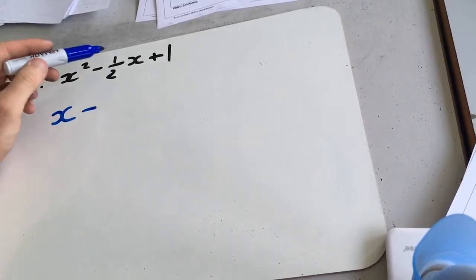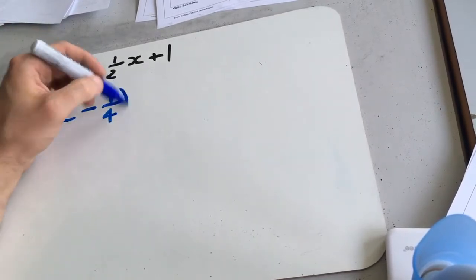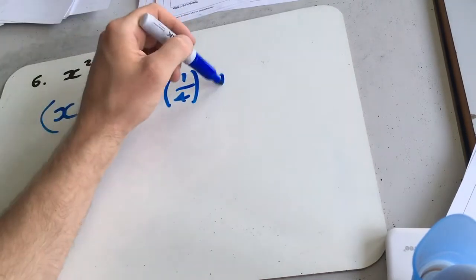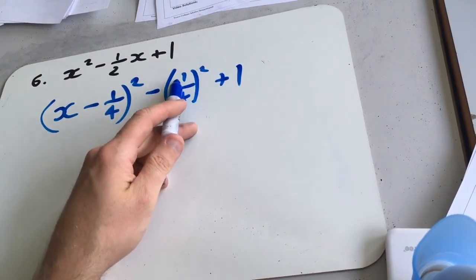So we get x minus, so b is a half, so b over 2 is going to be a quarter squared minus a quarter squared plus 1. So square a quarter again, square the top, square the bottoms.